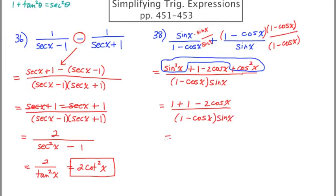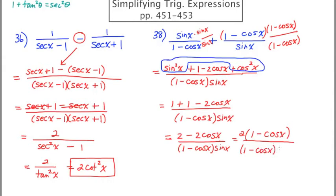We have 2 minus 2 cosine x over 1 minus cosine x times sine x. Almost there. Now I'll factor a 2 out of the top, and I'm left with 1 minus cosine x. And this is all over 1 minus cosine x times sine x. The 1 minus cosine x's will cancel. We're left with 2 over sine x. And if we use the reciprocal relationship, that's going to be 2 cosecant x. Okay. So two more examples that involve combining fractions and getting a common denominator.